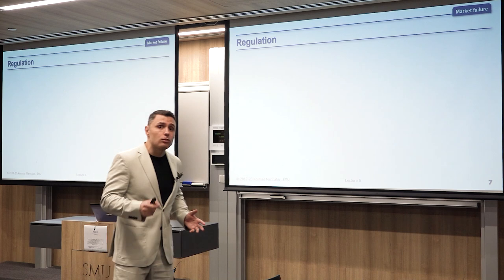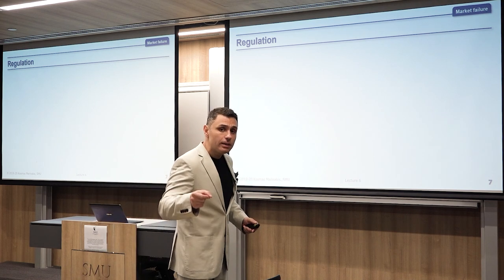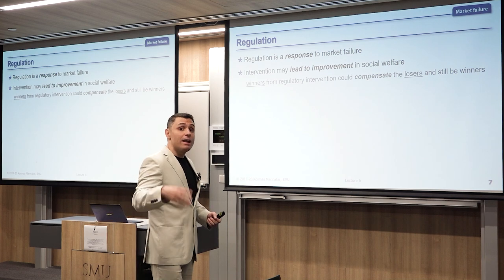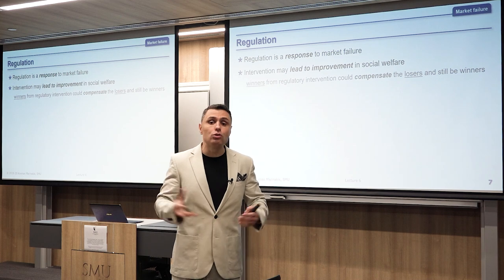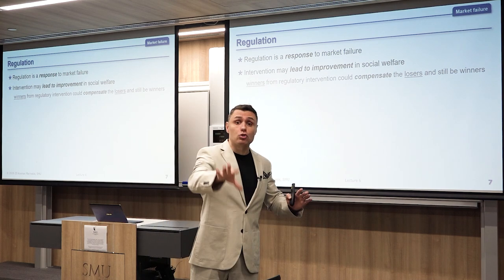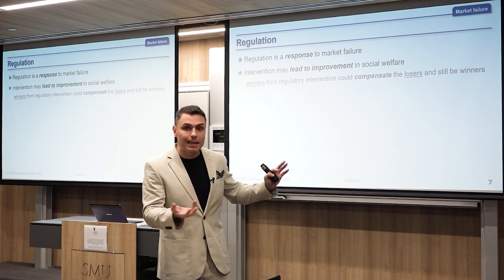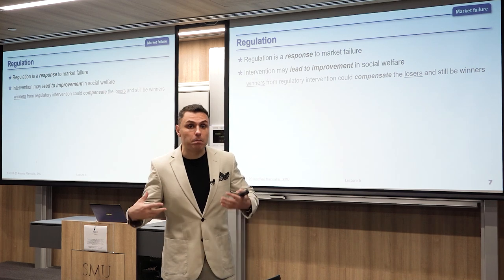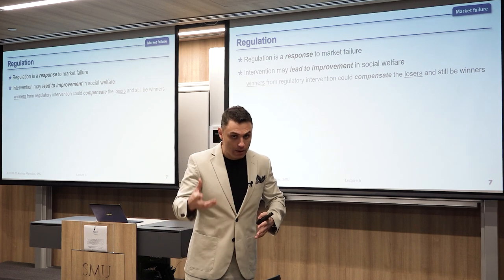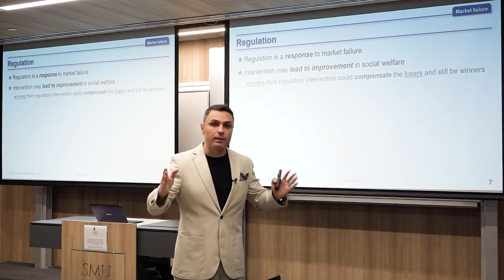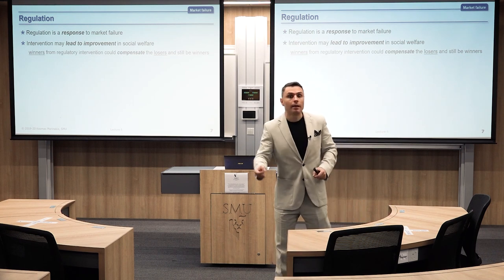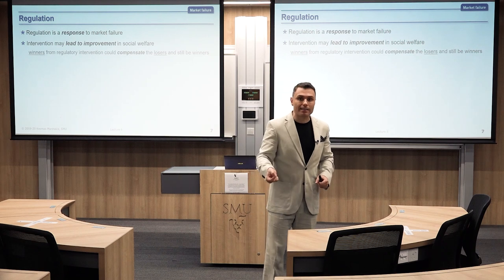So what can we do about market failure? We can regulate — intervene in the market and try to solve the problem. Regulation is a response to market failure. Intervention may improve social welfare, but most of the time you may have winners and losers. In some cases you fix the problem; in other cases you can make it much worse. Don't forget that — you should know what you're doing. We will see examples where people got trigger happy, tried to over-regulate, and damaged the market.